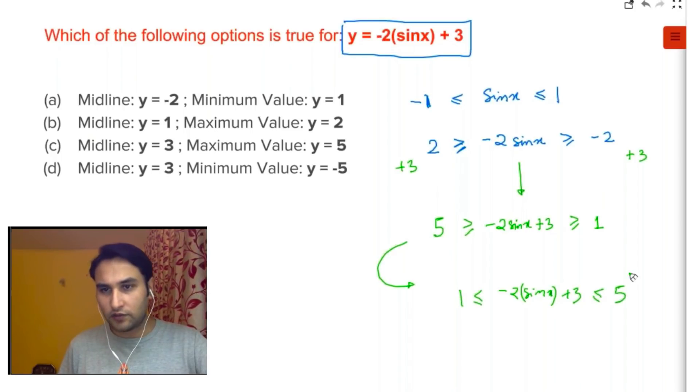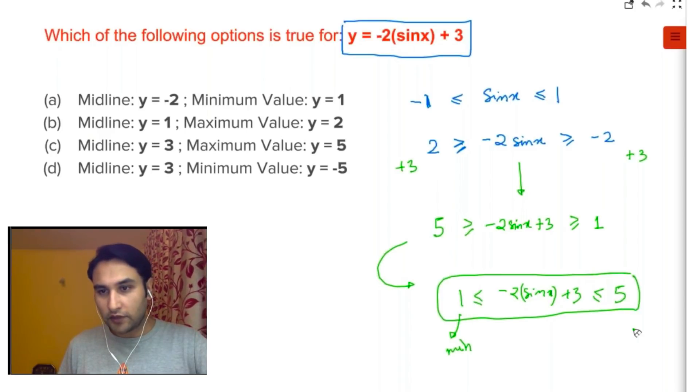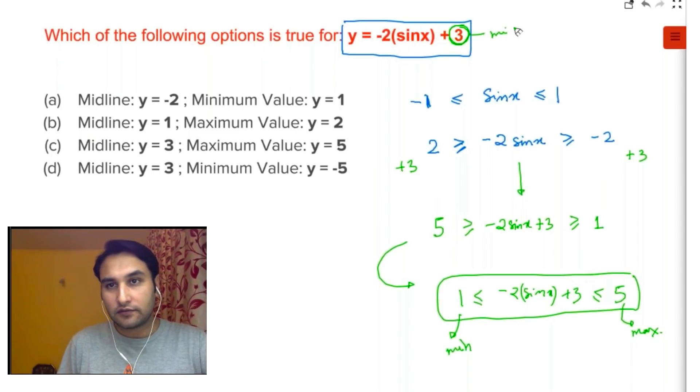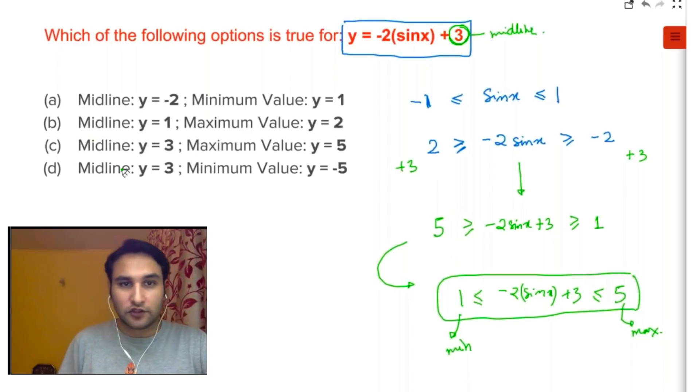The same thing, I'm just writing it like this so that it's easy to visualize. So one thing is for sure: this is my minimum value and this is my maximum value. Minimum and the maximum value. So the answer is the maximum value is 5. I told you the midline will always be what you add in the sine function, which is always the midline. And the maximum value is 5, minimum is 1. So the answer is C.